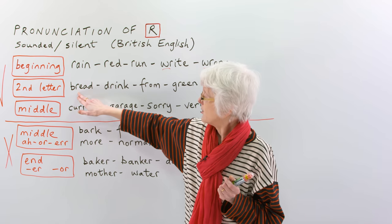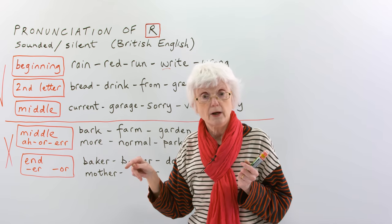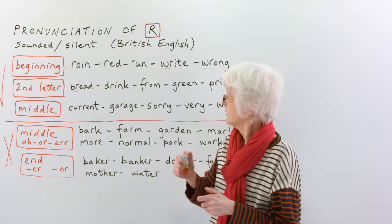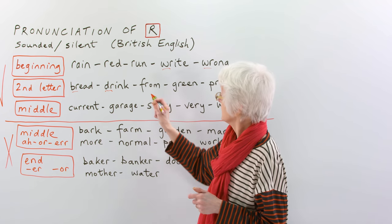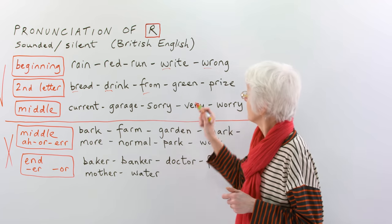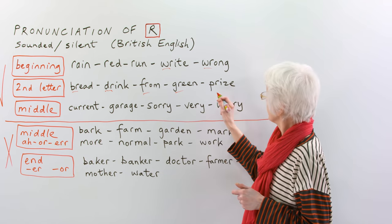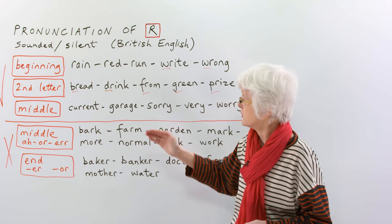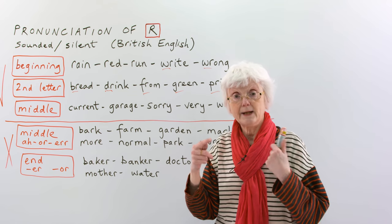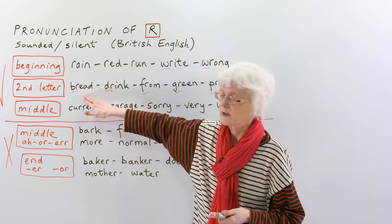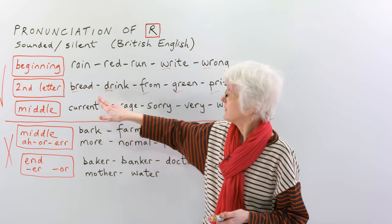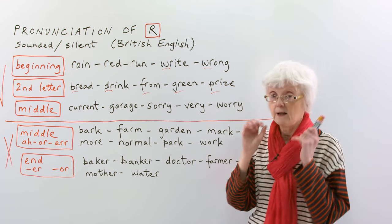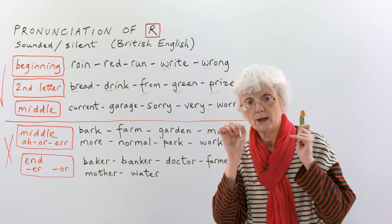Also, if the R is the second letter of the word following a consonant: with a B — bread; with a D — drink; with an F — from; with a G — green; with a P — prize. There are other consonants as well, these are just a few examples. The R has to be pronounced there in combination with the first consonant sound: bread, drink, from, green, and prize. It's still at the front of the mouth, pushing your lips forward.